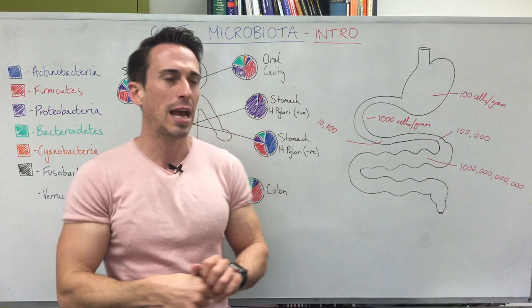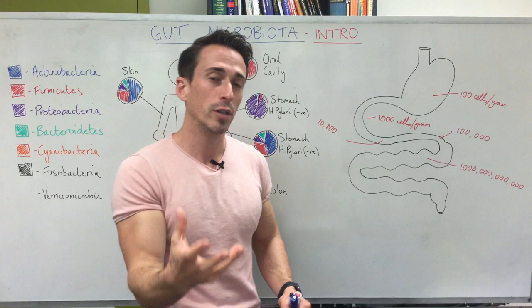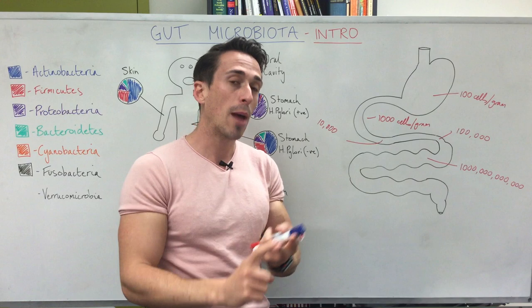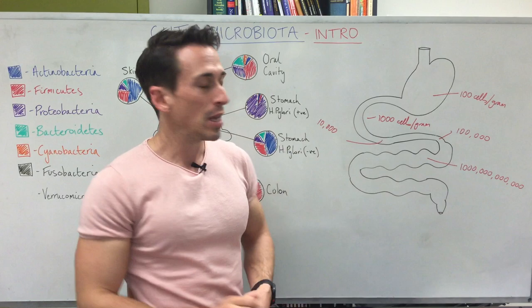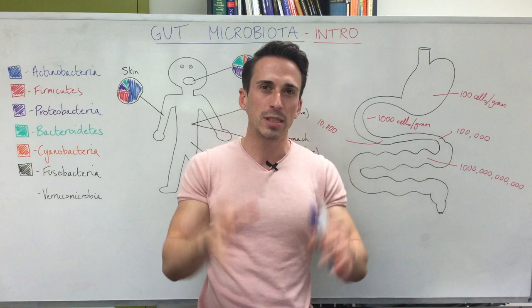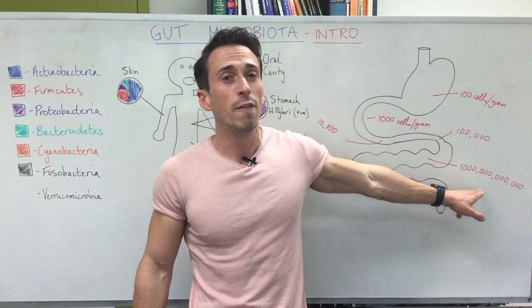As we move through the jejunum and ileum, this is the primary site for nutrient absorption. In the duodenum we break down nutrients using amylase for carbohydrates, lipases for fats, and proteases for proteins, so they can be absorbed in the jejunum and ileum. Once we get to the colon, this is the primary site for water absorption — and because there's such a large amount of bacteria, those bacteria produce metabolic products for us to absorb and use.